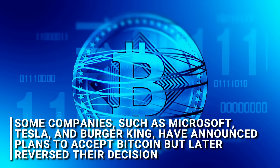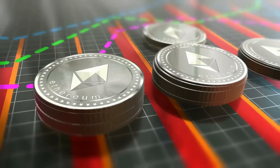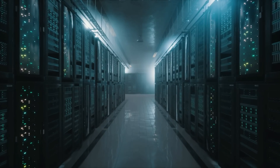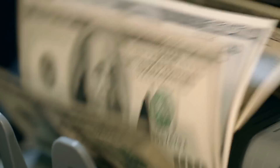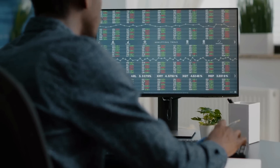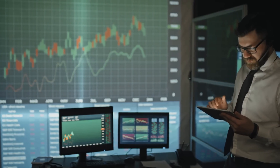Some companies such as Microsoft, Tesla, and Burger King have announced plans to accept Bitcoin but later reversed their decision. Another potential issue with cryptocurrencies is their environmental impact. The security of the blockchain relies on a large number of computers verifying transactions, which can be seen as inefficient and requires a significant amount of electricity. While this can be seen as a valid criticism, traditional banking systems also use a significant amount of electricity. Some people believe that newer cryptocurrencies have better technology and are more efficient, and that eventually renewable sources of electricity will power the verification process. However, there are also people who may not agree with this view.